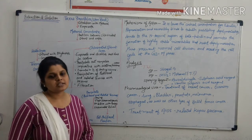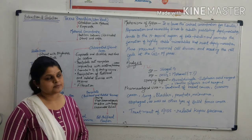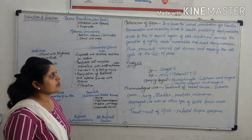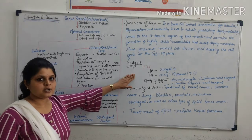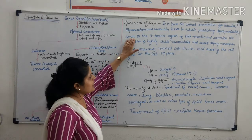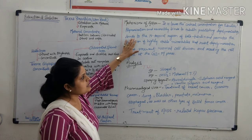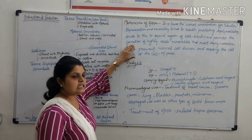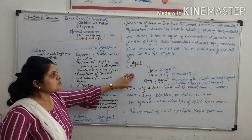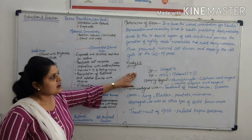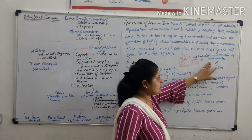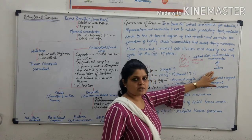The mechanism of action of paclitaxel: it lowers the critical concentration for tubulin polymerization and irreversibly binds to tubulin. It inhibits depolymerization. It binds to the N-terminal region of beta-tubulin and promotes the formation of highly stable microtubules, which resist depolymerization. This resists normal cell division and arrests the cell cycle at the G2/M phase, resulting in an assembly of microtubules that prevents cell division.